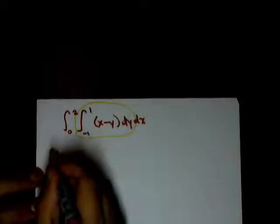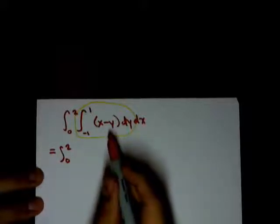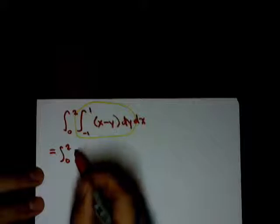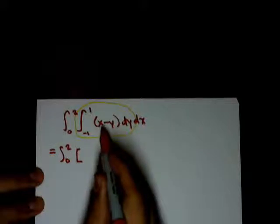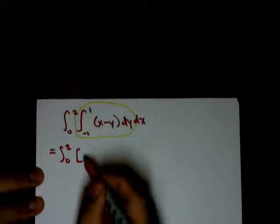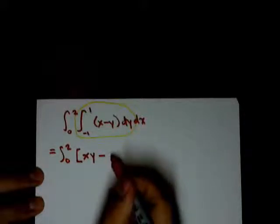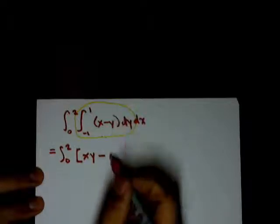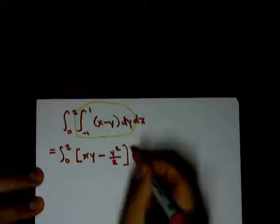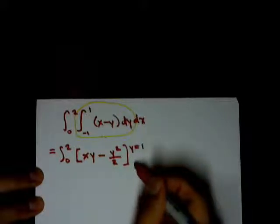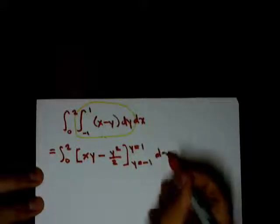To integrate this we're going to hold x constant and we're just going to use the normal rules of integration. So this x right here, we're going to get x times y, and integrate y we're going to get y squared over 2, and our limits of integration are y equals 1 and our lower limit is y equals minus 1 times our differential dx.